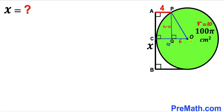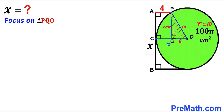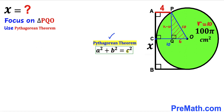I've connected center O with point P, and since OP is a radius of the green circle, OP equals 10 centimeters. Now let's focus on right triangle PQO and apply the Pythagorean theorem: a² + b² = c². In our case the hypotenuse is 10, and the other two legs are 6 and (x minus 10).